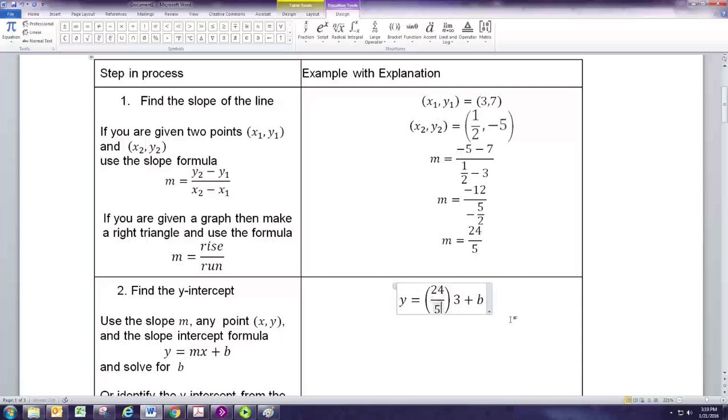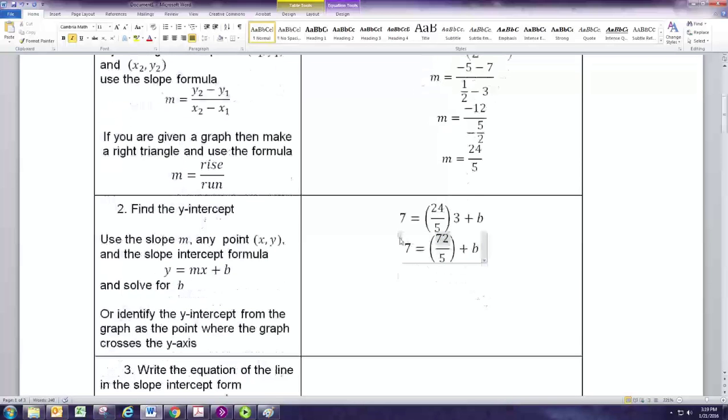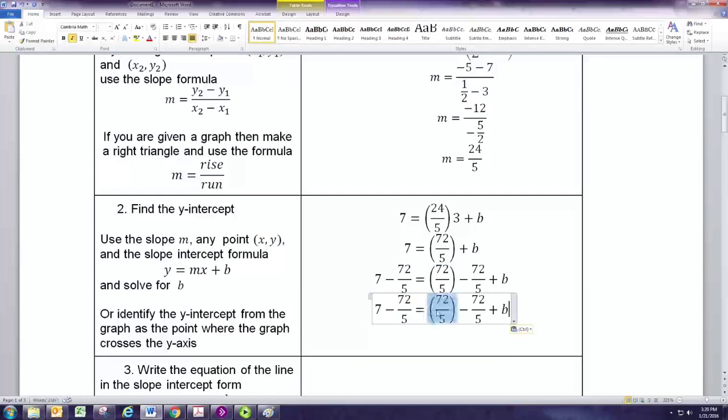So x is 3, and y is 7. And now you have a nice linear equation of one variable that you can solve for b, which is the y-intercept. So multiplying by 3 there, we'll get 72. And then we need to subtract 72 from both sides. And on the right side, the 72 over 5 and the negative 72 over 5 add to 0. So we just have b. On the left side we have 7 minus 72 over 5. And 7 is 35 over 5. So 35 minus 72 would be negative 37 over 5.